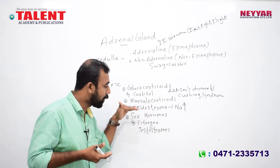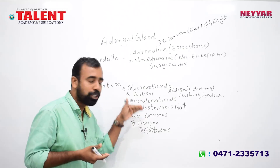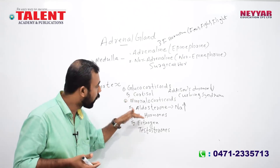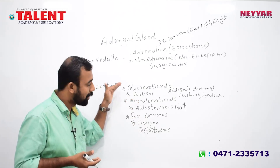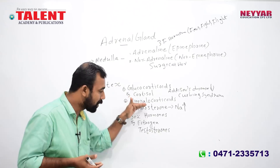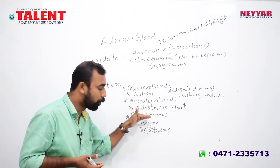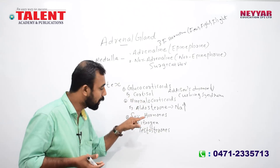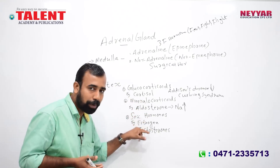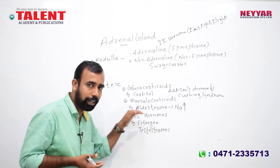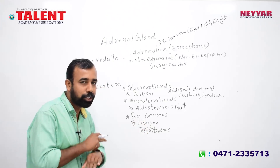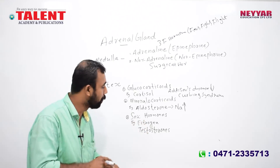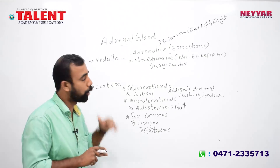The third group is sex hormones. Sex hormones include estrogen and testosterone. Female sex hormones are estrogen and male sex hormones are testosterone. These two hormones can mix in different parts of our body.